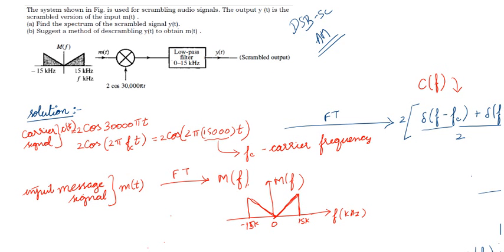The first question asks us to draw the spectrum of y(t). For that, we first need to find the signal available at the output of the multiplier. To do that, we multiply the spectrum of m(t) along with the spectrum of this signal, which is 2cos(30000πt). Let me give this signal the name c(t), the carrier, whose spectrum is c(f).